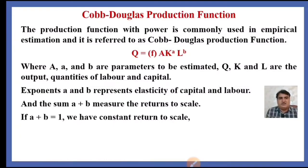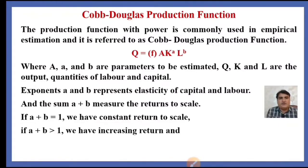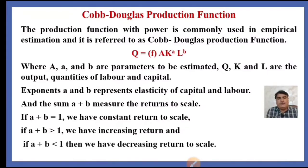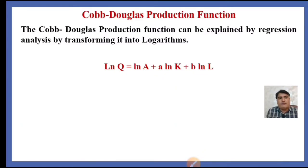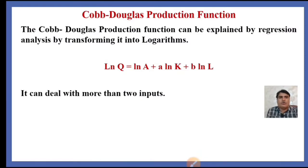If alpha plus beta equals 1, we have constant returns to scale. If alpha plus beta is greater than 1, we have increasing returns. If alpha plus beta is less than 1, we have decreasing returns to scale. The Cobb-Douglas production function can be estimated by regression analysis by transforming it into logarithms: ln(Q) = ln(A) + alpha*ln(K) + beta*ln(L). It can also deal with more than two inputs.